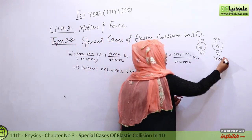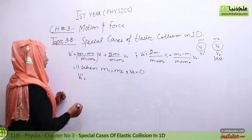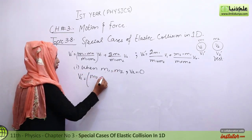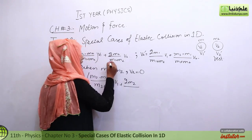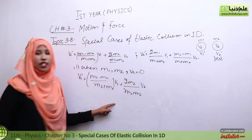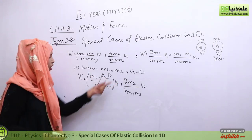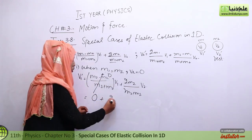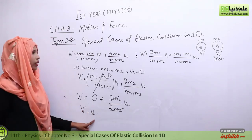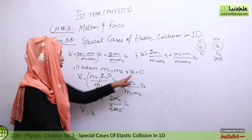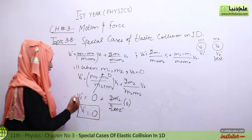Now let's solve for v1'. Since m1 equals m2, we have m2 minus m2 equal to zero in the numerator, making that term zero. For the second term, 2m2 over 2m2 cancels. But we also have the condition v2 equals zero, so that term is also zero. Therefore, v1' is equal to zero.